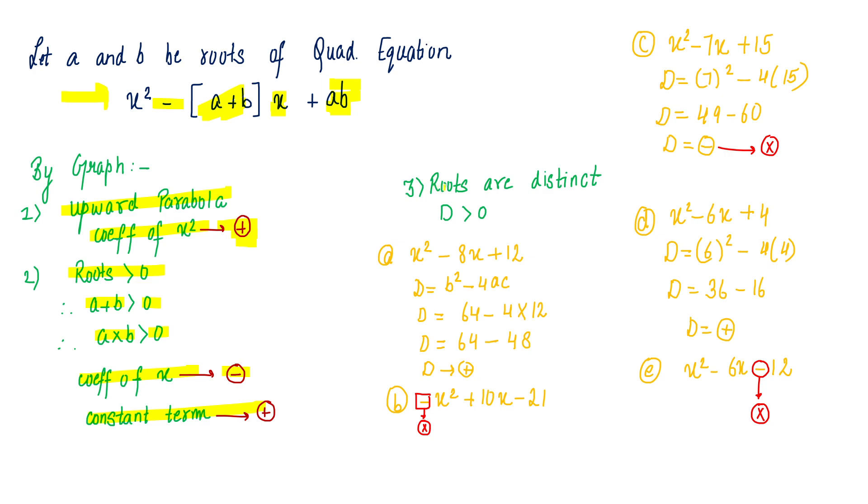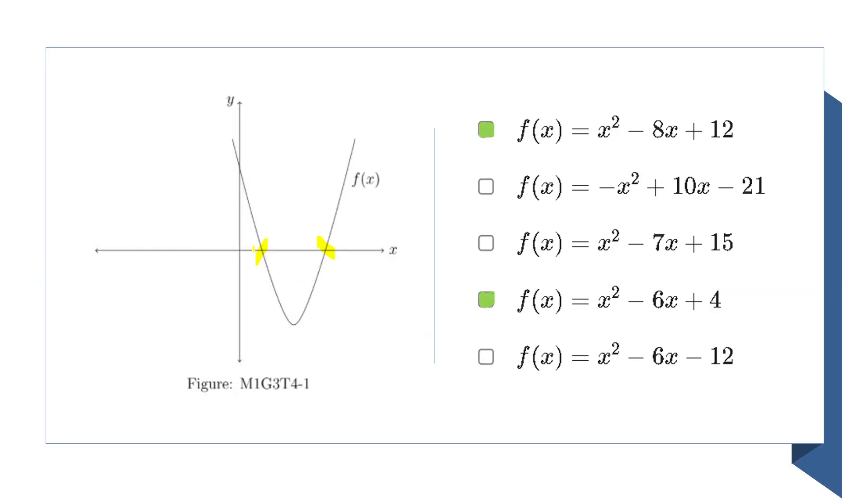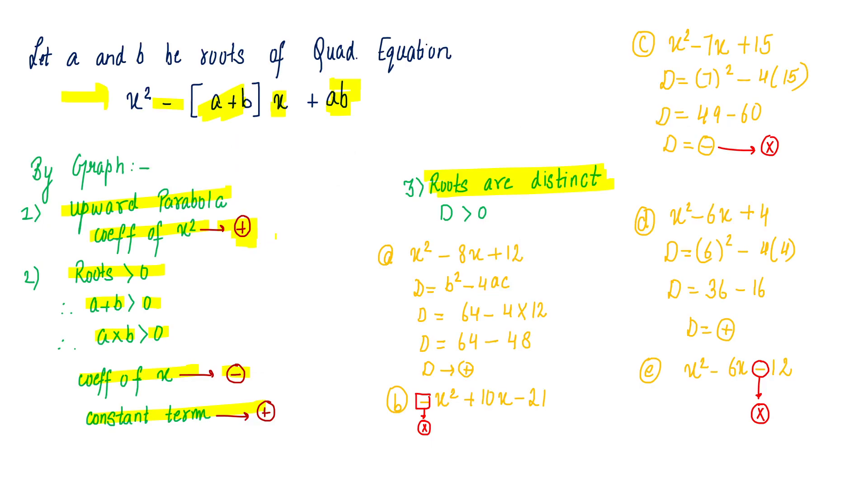Now again, a very important thing to notice—and here we can make mistakes—is that you also remember that both roots are distinct. The graph is cutting at two x points, so I have two distinct roots of this particular quadratic equation.